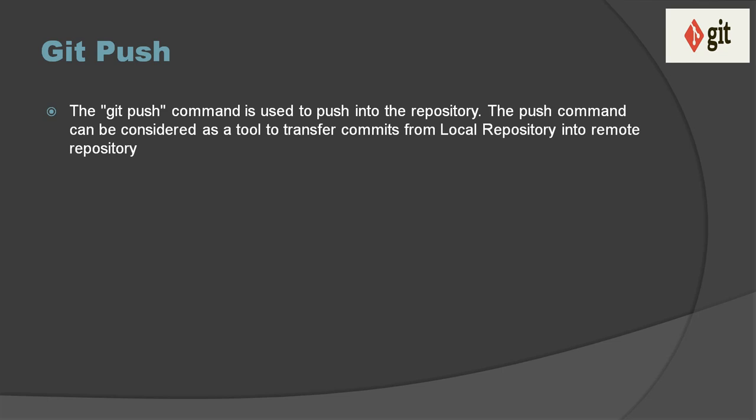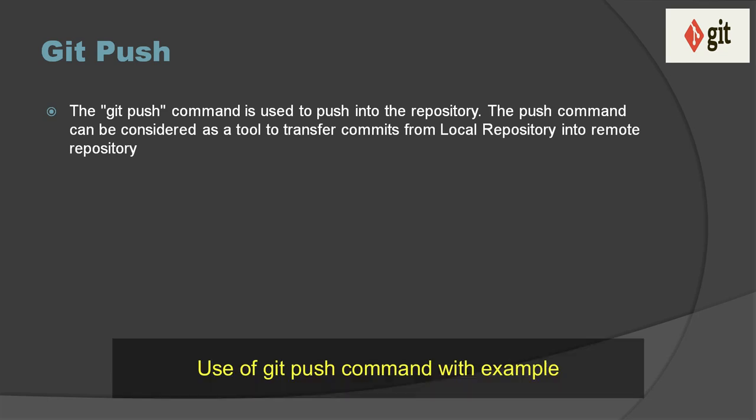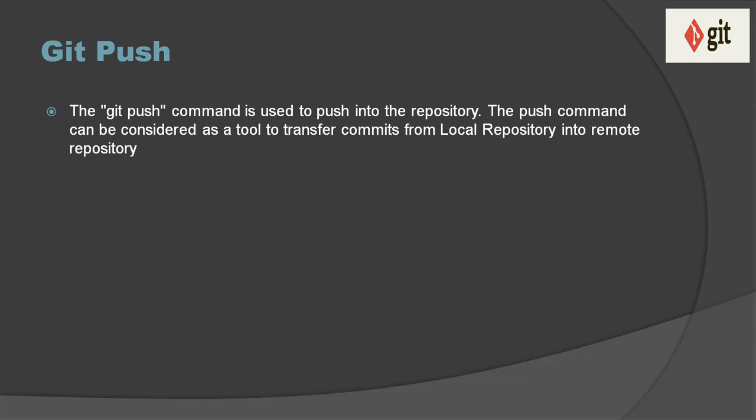The first use of the git push command is to push into the repository. The push command can be considered as a tool to transfer commits from a local repository to a remote repository. When you use git for the first time, or for an existing repository, if you want to publish your changes to the remote repository, there are specific steps to follow.